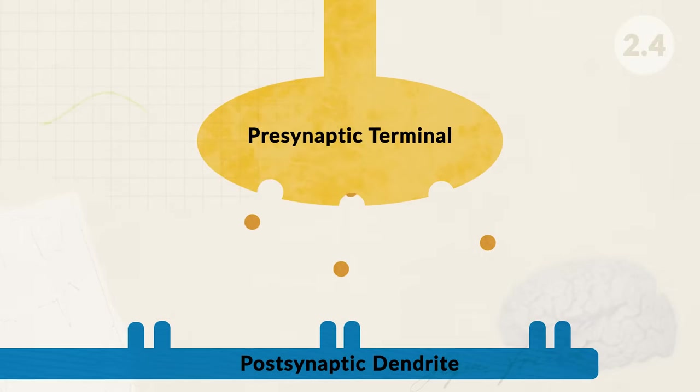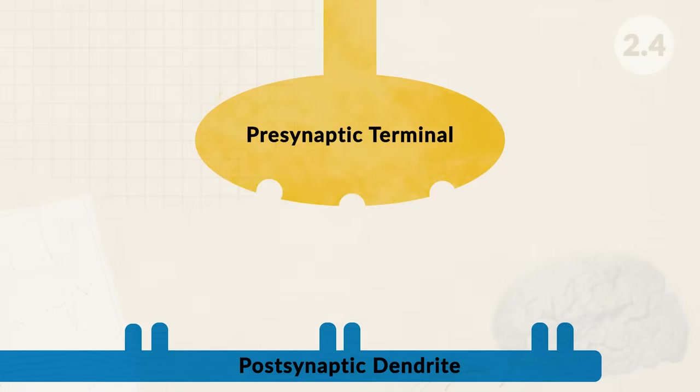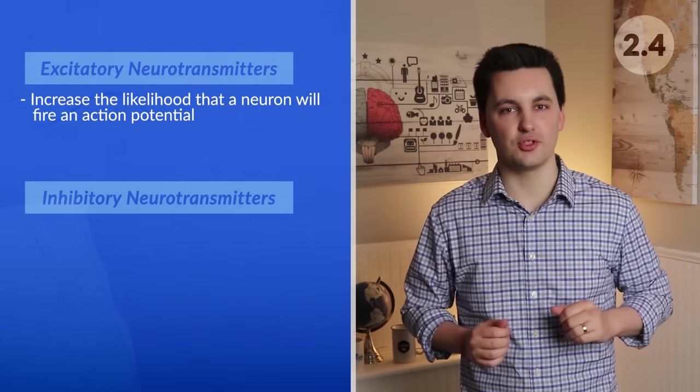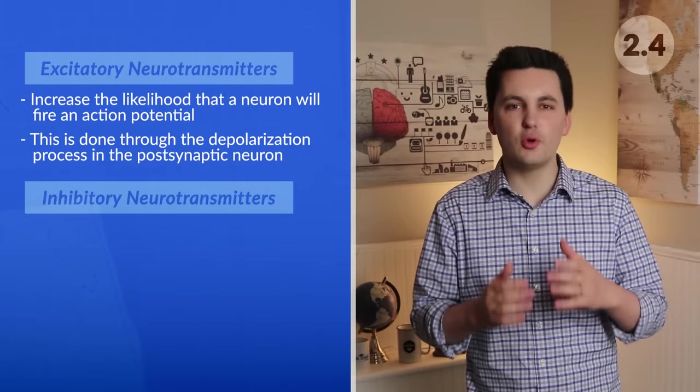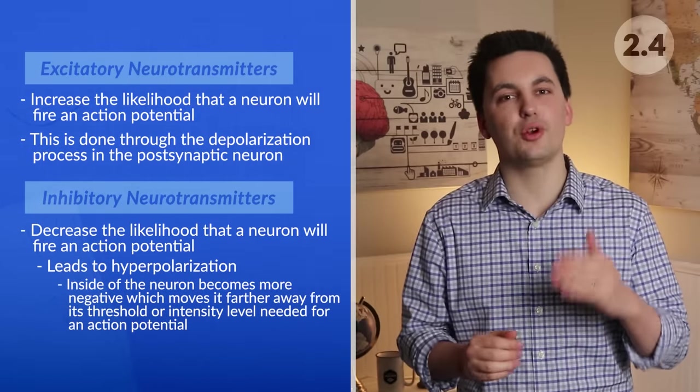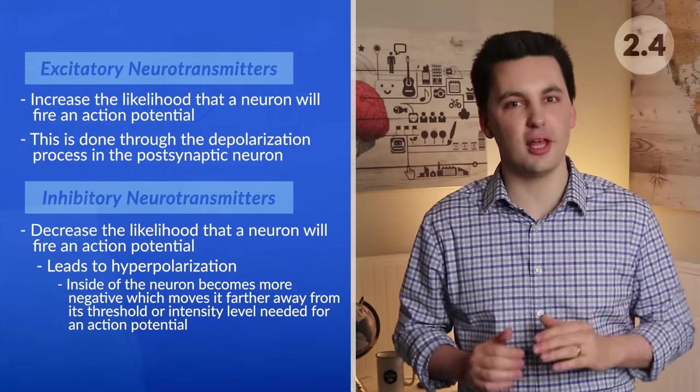The pre-synaptic terminal is the axon terminal of the neuron, which converts the electrical signal to a chemical one and sends neurotransmitters into the synaptic gap, while the post-synaptic terminal is where the neurotransmitters are accepted in the dendrites of the receiving neuron. Remember: pre means before and post means after. Once the neurotransmitters have passed their messages onto the post-synaptic neuron, they will unbind with the receptors — some are destroyed and others get reabsorbed. The process of taking excess neurotransmitters left in the synaptic gap is known as reuptake. Depending on what neurotransmitters bind to which receptors, the neuron will either get excited or inhibited. Excitatory neurotransmitters increase the likelihood of an action potential through depolarization, while inhibitory neurotransmitters decrease it, leading to hyperpolarization — when the inside of the neuron becomes more negative, moving it farther from its threshold.